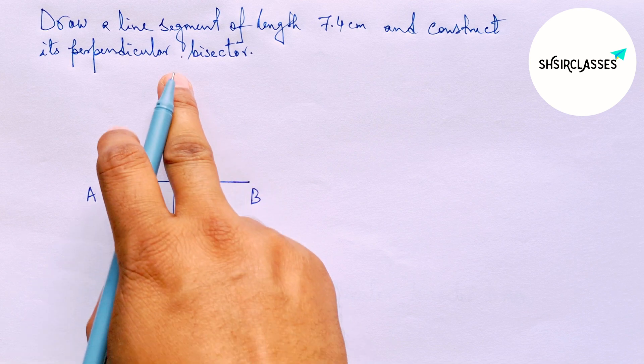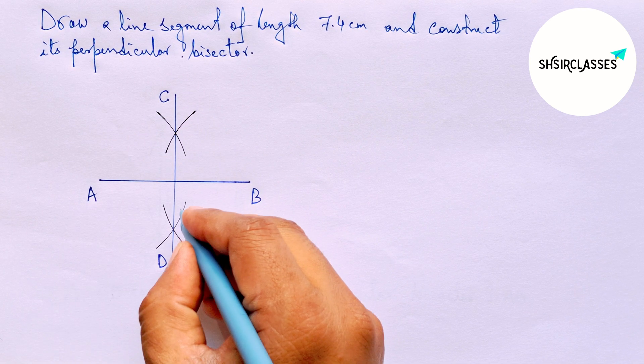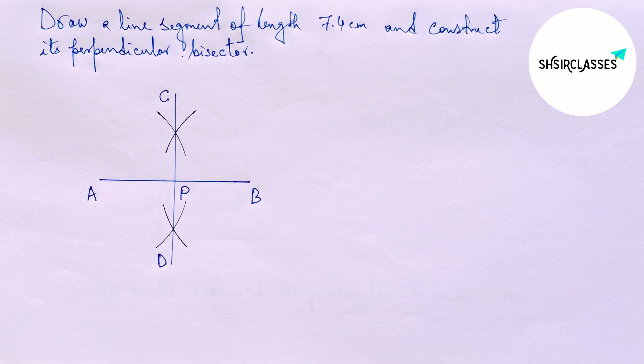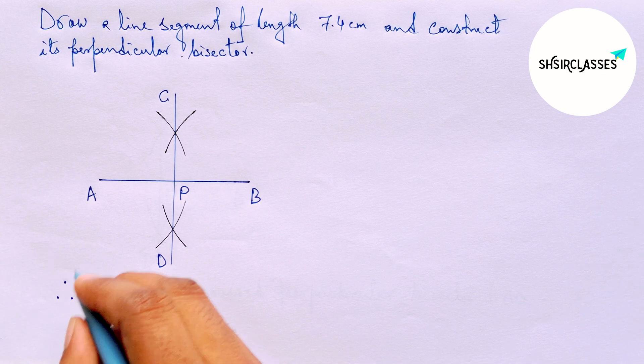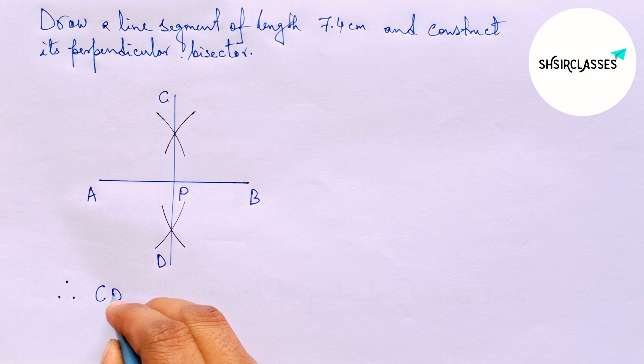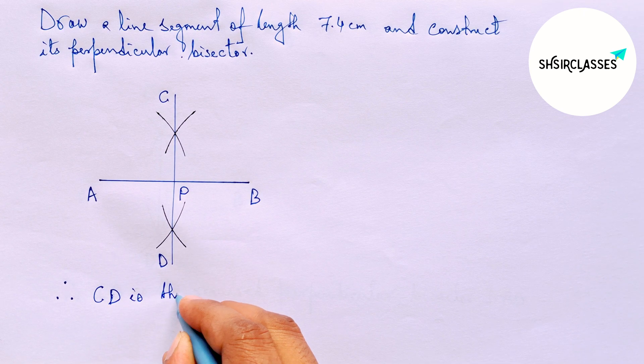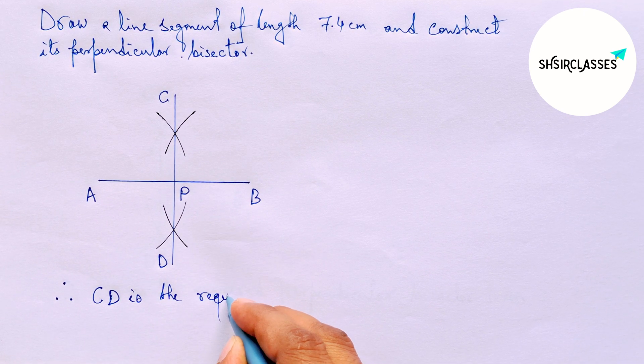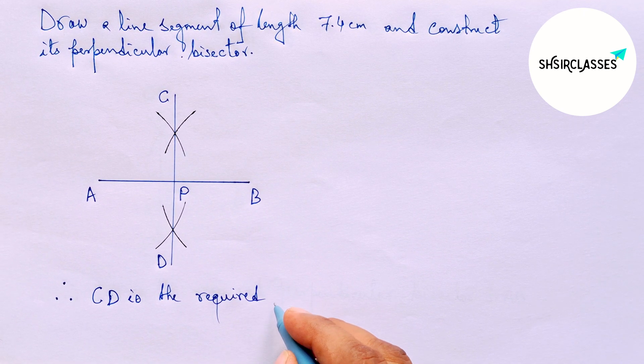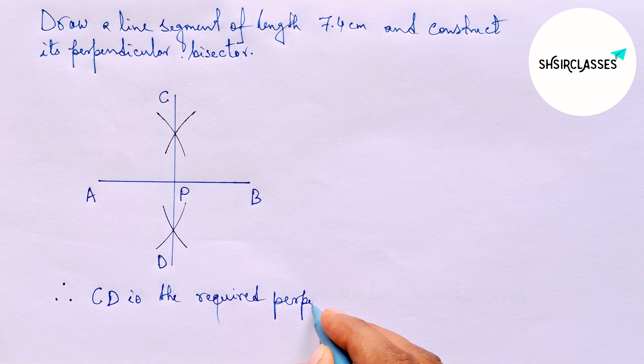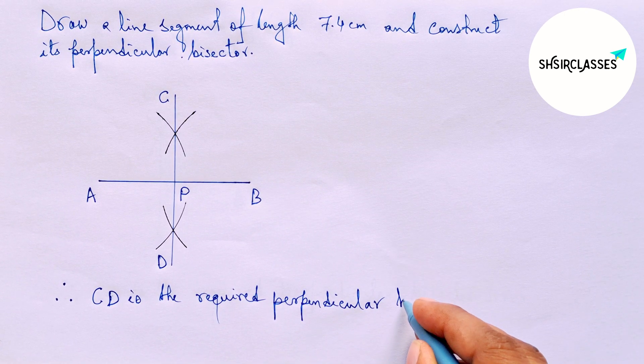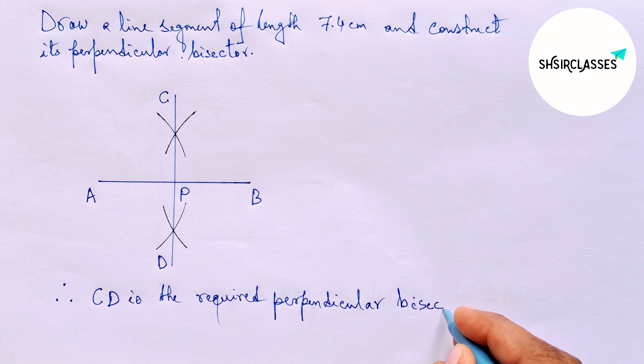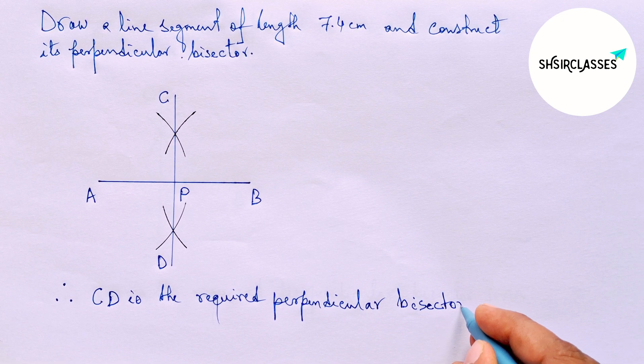AB and CD both intersect here at a point. So taking here point P. Therefore, CD is the required perpendicular bisector to the line AB equal 7.4 centimeter and by this way you can construct a perpendicular bisector to a given line in easy way.